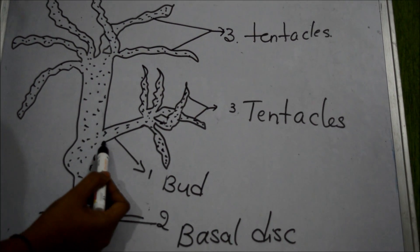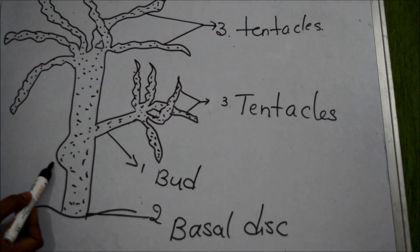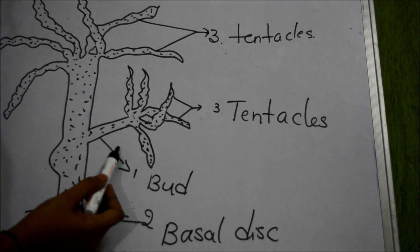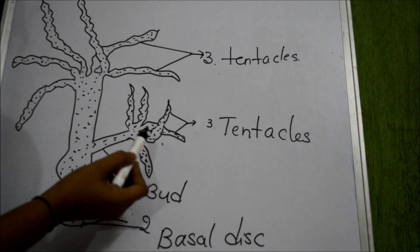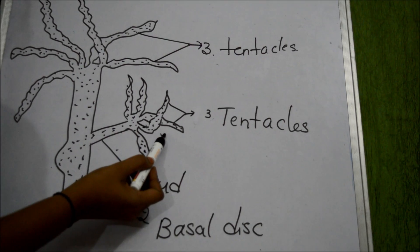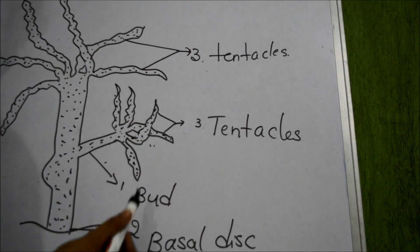This bulging structure, see this is a bulging structure we may call as bud. Here you may observe the bulging. The bud develops tentacles and these tentacles grow in size. Then it separates from the parent Hydra and lives independently.